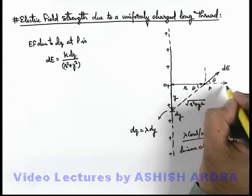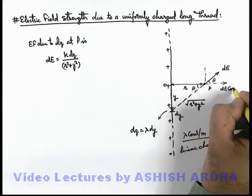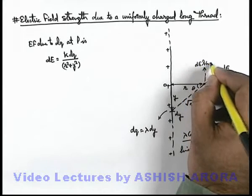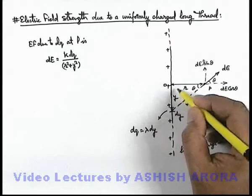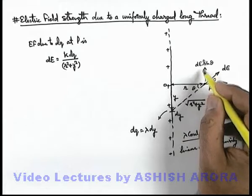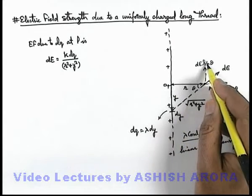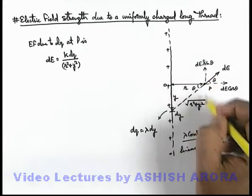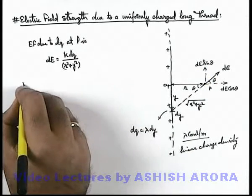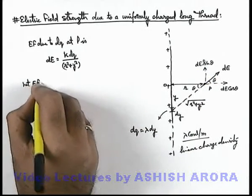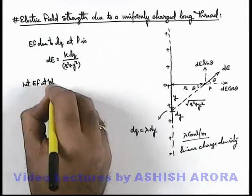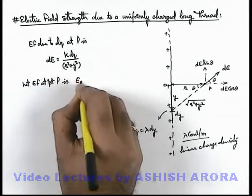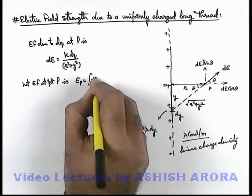So we resolve dE into two mutually perpendicular components. If this angle is theta, one component is dE·cosθ and the other is dE·sinθ. The sine theta components due to the lower thread are in the upward direction and due to the upper thread are in the downward direction, so they cancel each other. Therefore, the net electric field at point P is the integration of dE·cosθ.